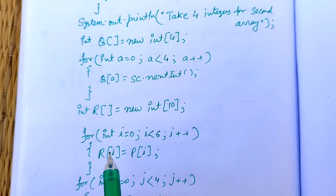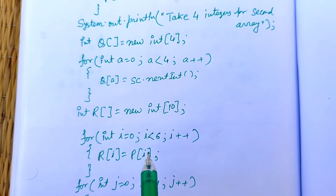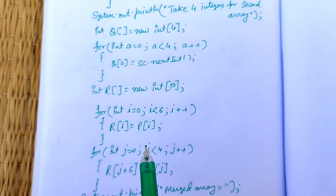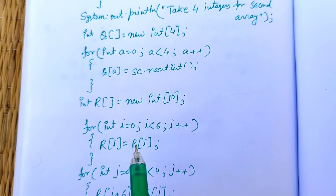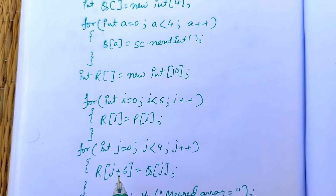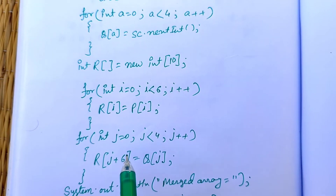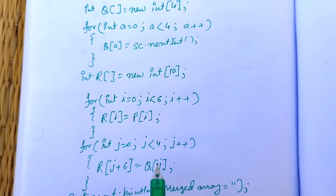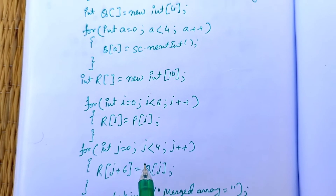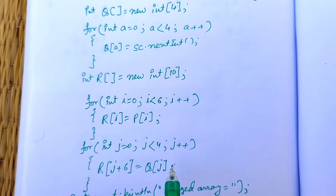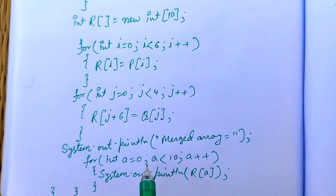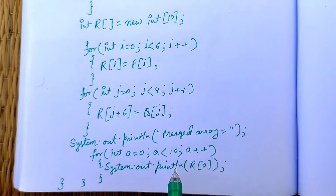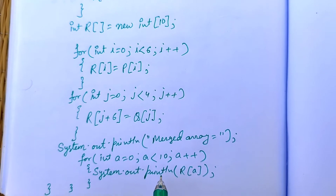We store p[i] into r[i] one by one from index 0 to 5. Then j starts at 0, and j plus 6 equals 6, so q[0] will store in r[6], q[1] in r[7], and so on. Finally, we print the merged array from index 0 to less than 10. That is process one.